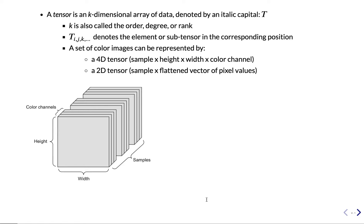One typical example is a set of colored images. An image can be represented by a height and a width, where every value is a pixel. The image also has color channels — red, green, blue — and there are multiple images in the data set, giving a fourth dimension. We could flatten this two-dimensional array into one vector, but then we lose some relationships between the values, so it's typically represented as a four-dimensional tensor.